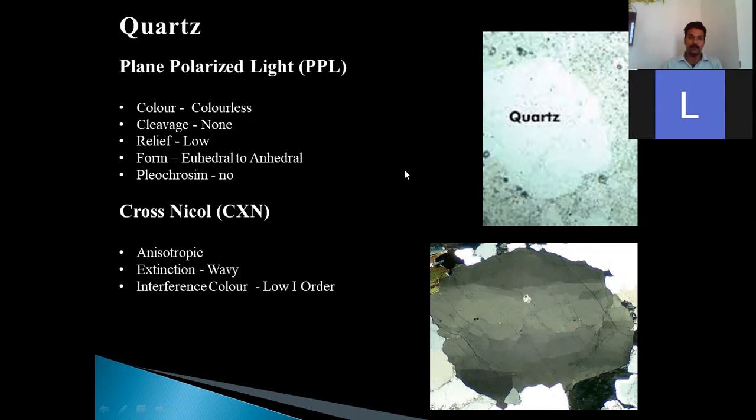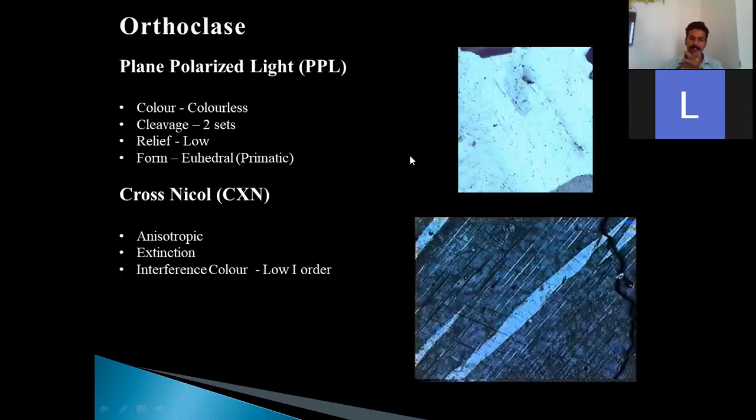Let us see the next mineral - orthoclase. Orthoclase is the alkali feldspar and its chemical composition is KAlSi3O8. This actually belongs to the alkali feldspar where they are light in color. As you have studied them in the physical properties, where their form is tabular, they have perfect cleavages, et cetera. In plane polarized light, orthoclase is colorless. Cloudy nature can appear on alteration, but basically you can get the colorless nature.